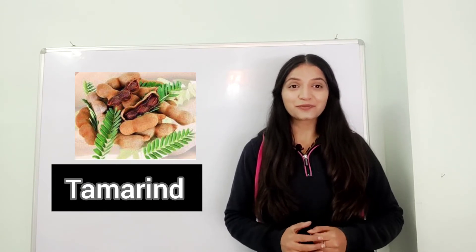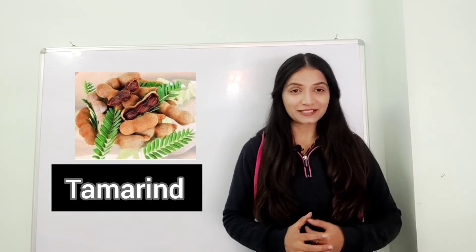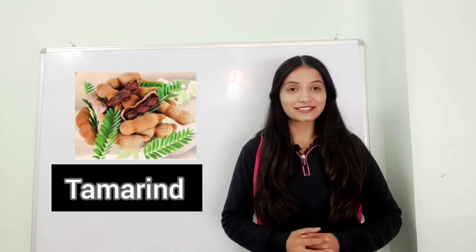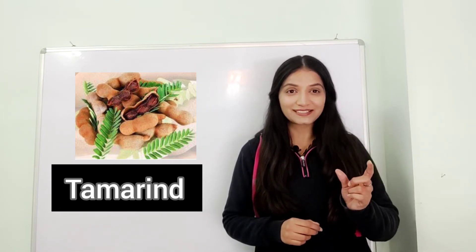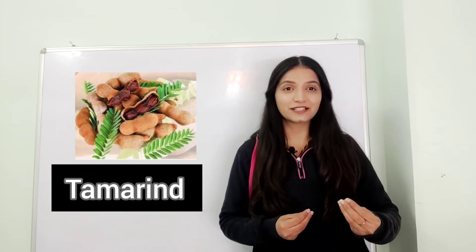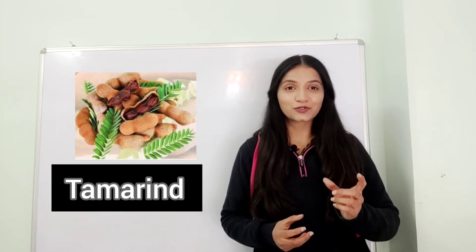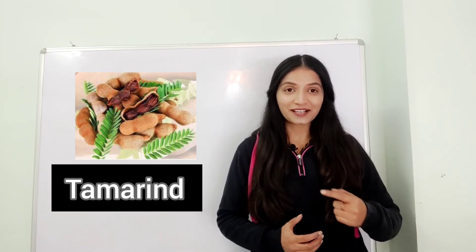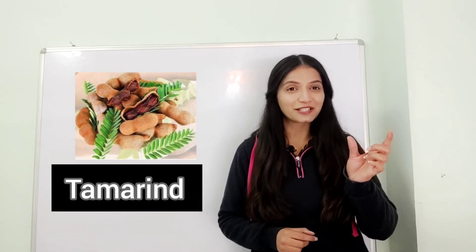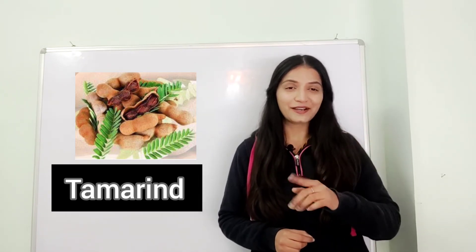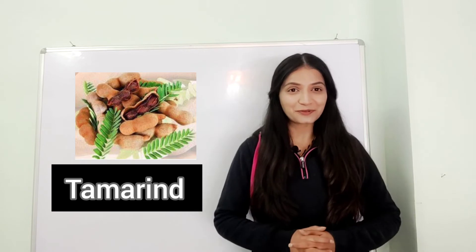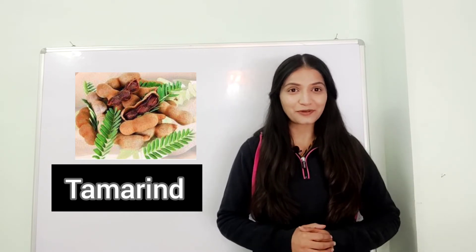Next fruit is Imli — Imli is called Tamarind. If you want to buy something in the market, like some eatable, you can check the ingredients list on the back. There is always a name of Imli, so it is called tamarind. When you read it, you will remember that Imli is called tamarind.